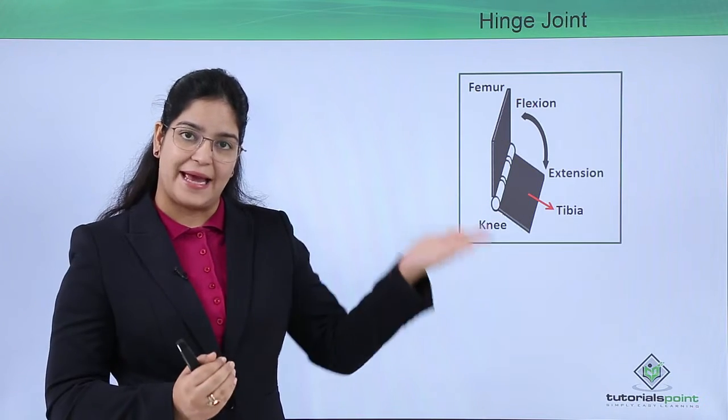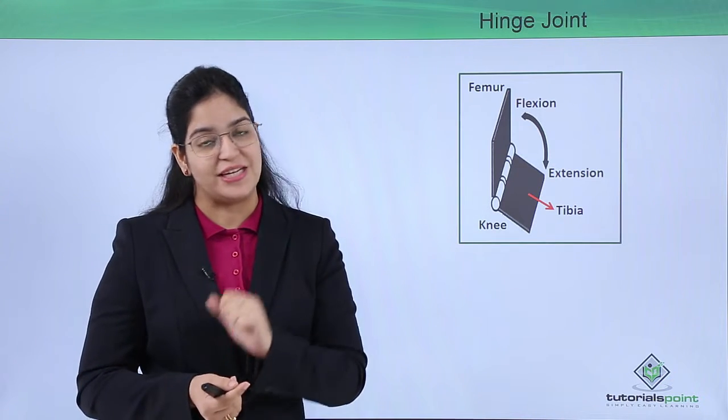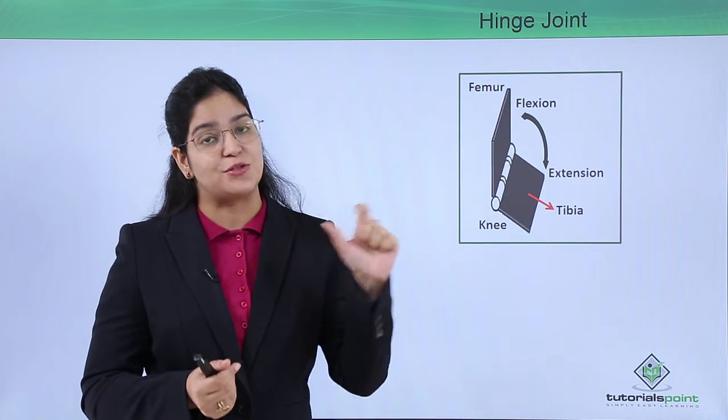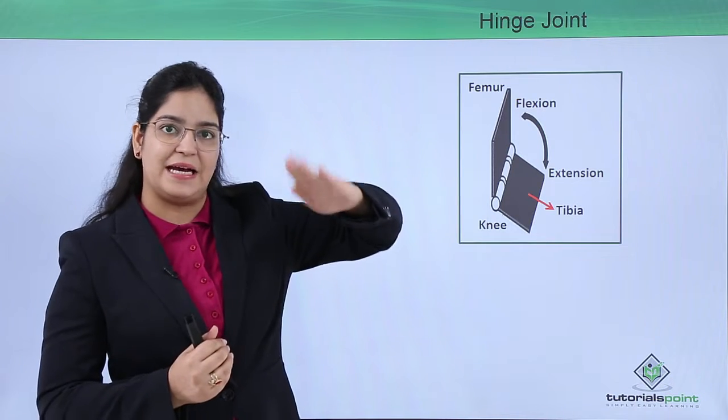The same type of hinge is present in our body. A muscular hinge, or a bony muscular structure, is present in our body so that one part is fixed and the other is moving.